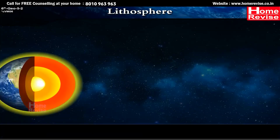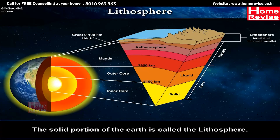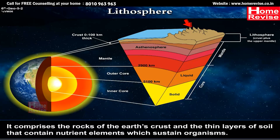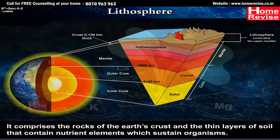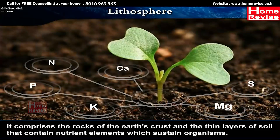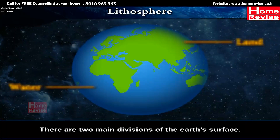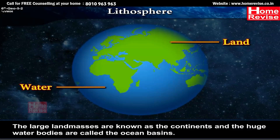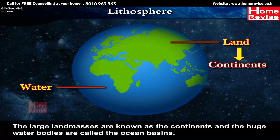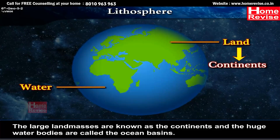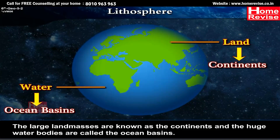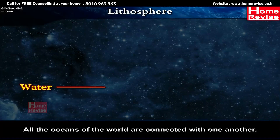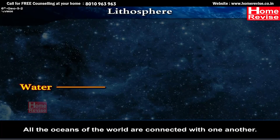Lithosphere. The solid portion of the Earth is called the Lithosphere. It comprises the rocks of the Earth's crust and the thin layers of soil that contain nutrient elements which sustain organisms. There are two main divisions of the Earth's surface: the large land masses are known as the continents, and the huge water bodies are called the ocean basins. All the oceans of the world are connected with one another.